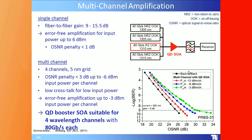Multi-channel amplification at four different wavelengths: three 40 Gbit/s sources and one 80 Gbit/s source on a 5 nm grid. Power penalty below 3 dB down to minus 6 dBm input power per channel, very low crosstalk at low input powers, and error-free amplification up to minus 3 dBm input per channel. Quantum dot booster SOAs support all four wavelength channels including 80 Gbit/s — totaling 320 Gbit/s.